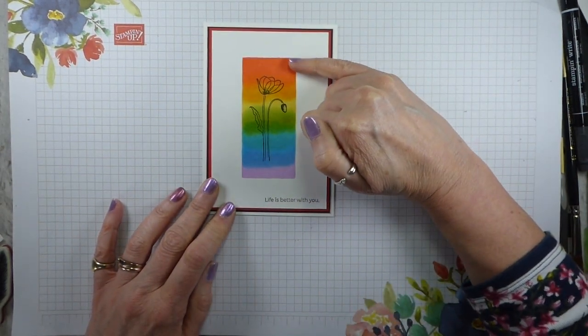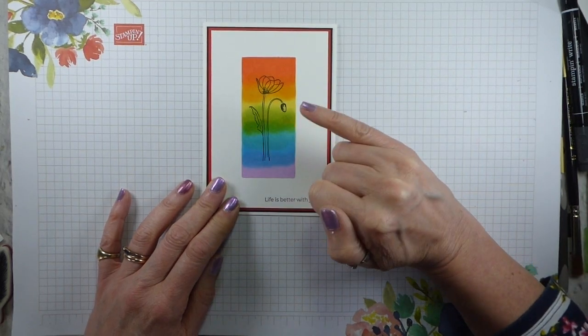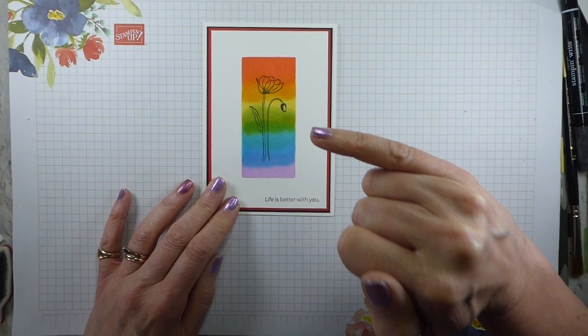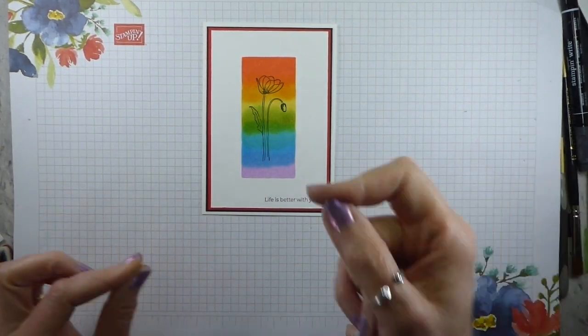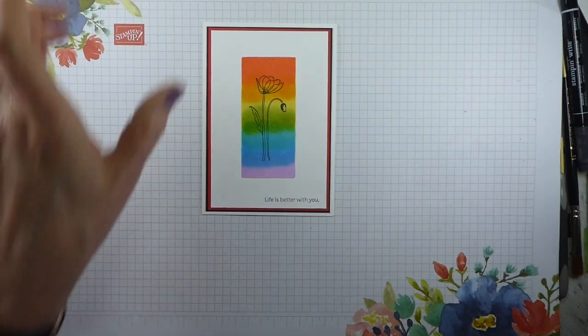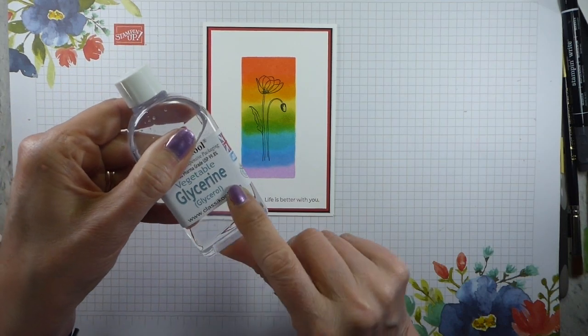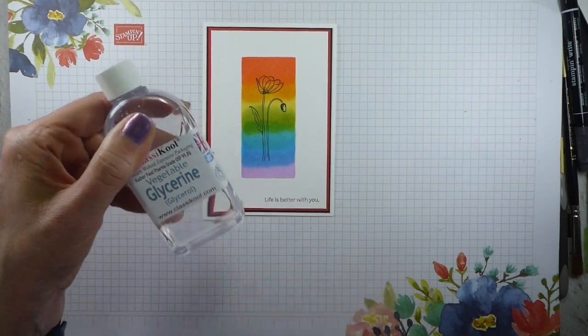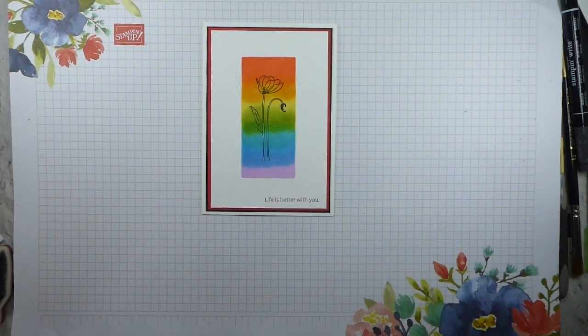I'm going to have to try and remember: Poppy Parade, Pumpkin Pie, Daffodil Delight, Granny Apple Green, Bermuda Bay, Pacific Point, and Gorgeous Grape. I've used the same technique that I used last week with sponge daubers with the addition of a tiny little bit of glycerin, a mask, and yeah.